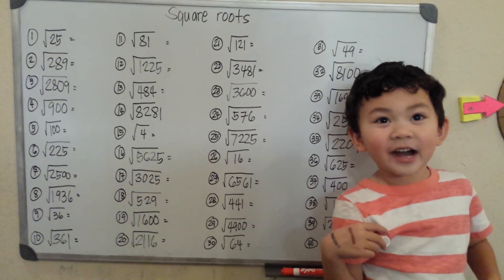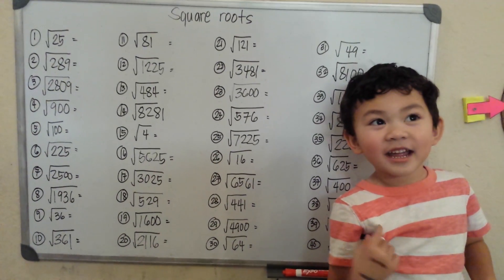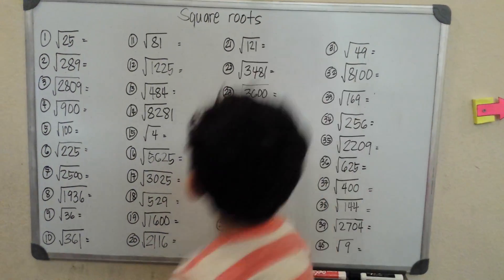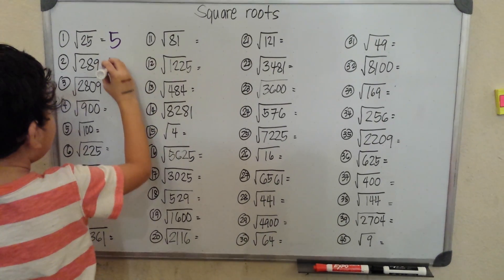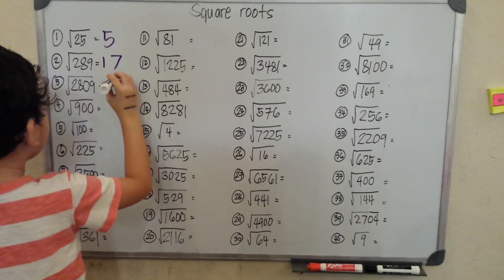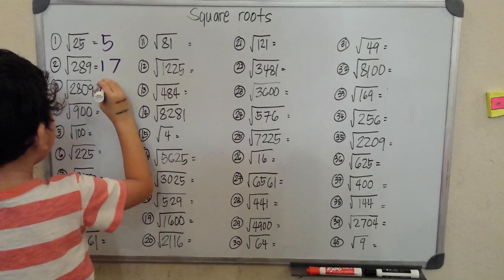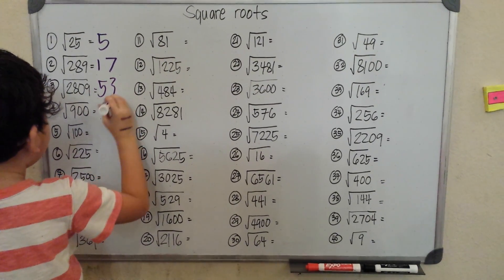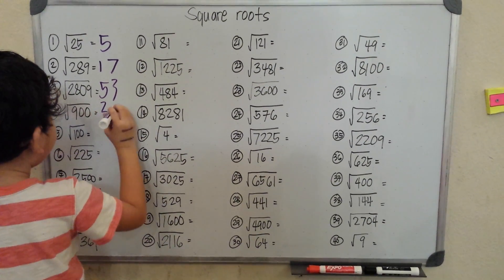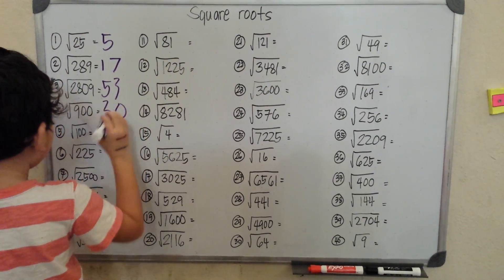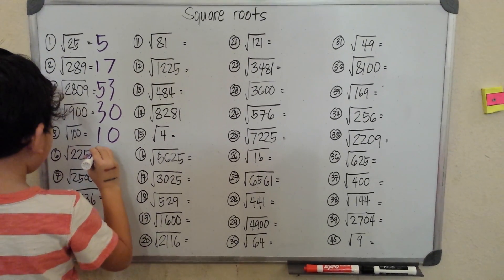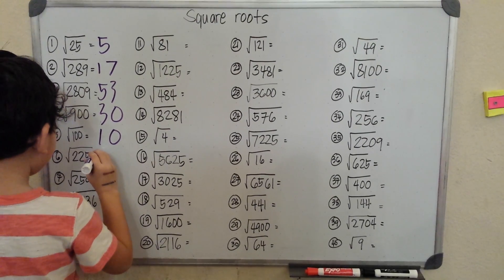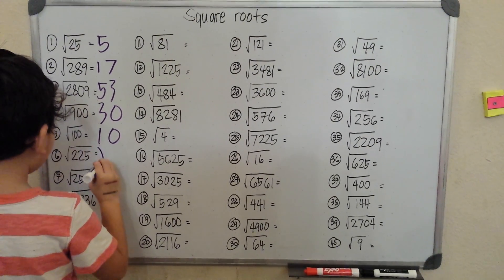Hello, my name is Regal, and today I am going to do square roots. Square root of 25 is 5, square root of 29 is 17, square root of 289 is 53, square root of 900 is 30, square root of 100 is 10, square root of 225 is 15.